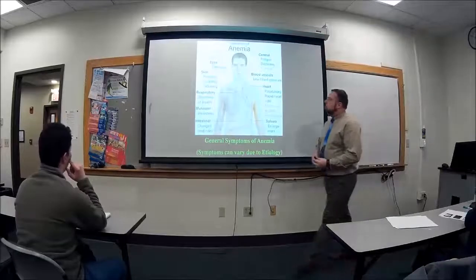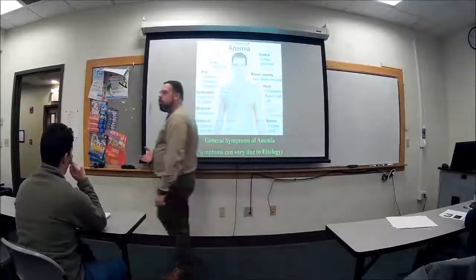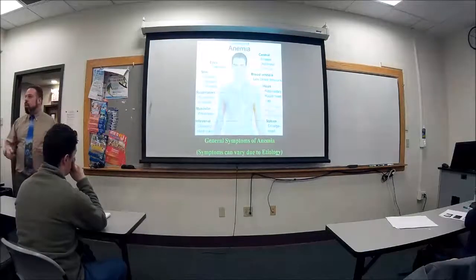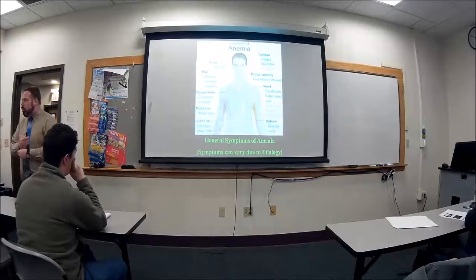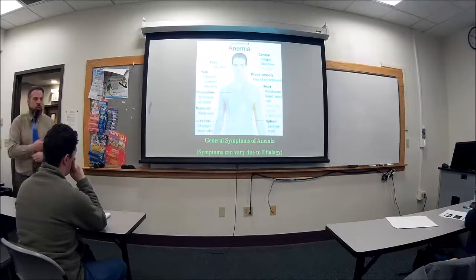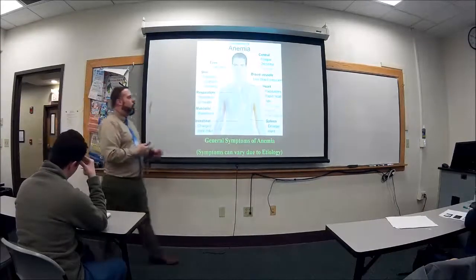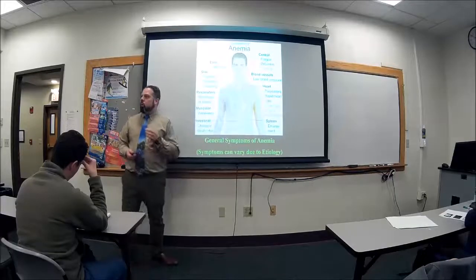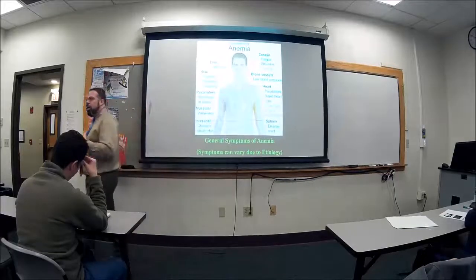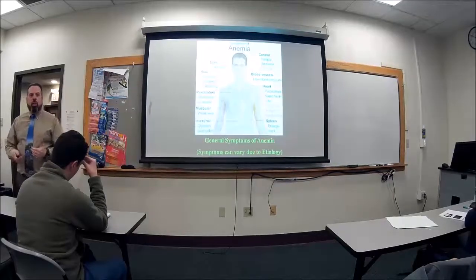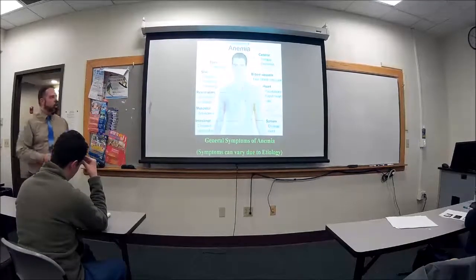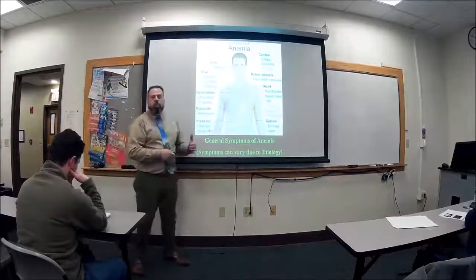These are just general symptoms of someone who's got anemia. Now there are a lot of different forms of anemia and we're going to go through them all. Some symptoms are for all anemia, some are more specific. For example, with iron deficiency anemia you're not going to get splenomegaly — your spleen is not going to get enlarged. You may not get jaundice with someone who's got iron deficiency.